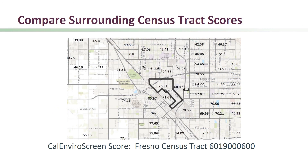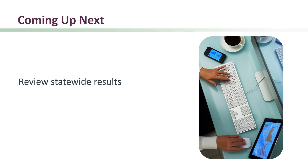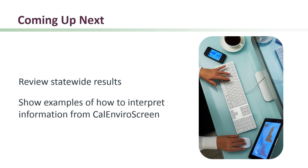Here are the outlines of the surrounding census tracts and their CalEnviroScreen scores. Some of the surrounding tracts have similar scores, while some are lower. The overall CalEnviroScreen scores can also be converted into percentiles so that we can compare the census tracts to one another. Now you can see the CalEnviroScreen scores categorized by color based on percentile. The darkest red represents the highest scoring tracts with percentiles between 90 and 100. Most of the census tracts surrounding our example tract score relatively highly, as indicated by the color. In the next module, we'll review the statewide results and give you some examples of how to interpret the information from CalEnviroScreen.